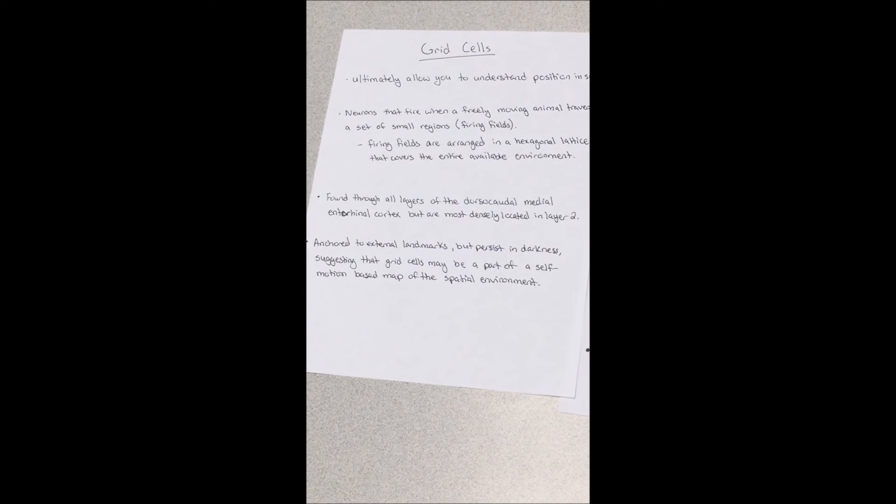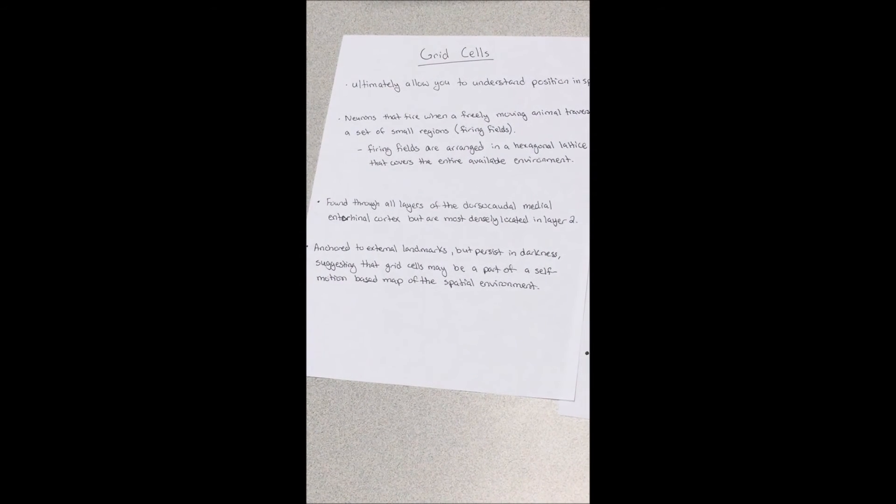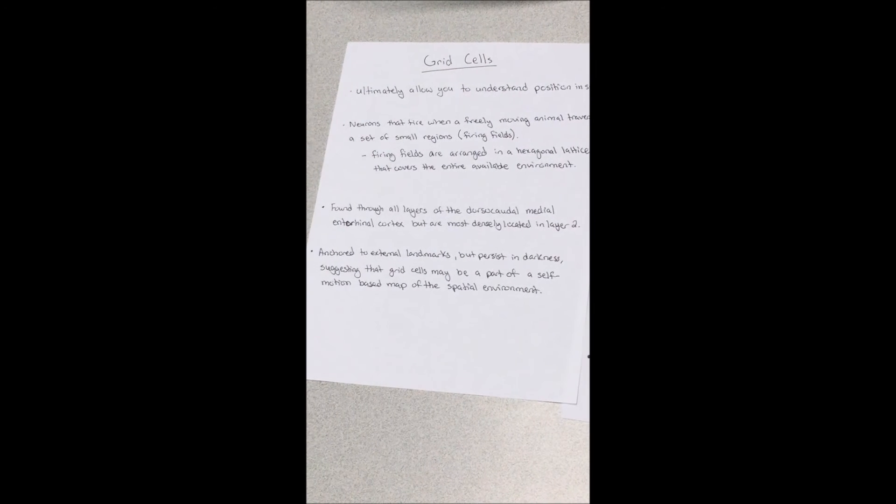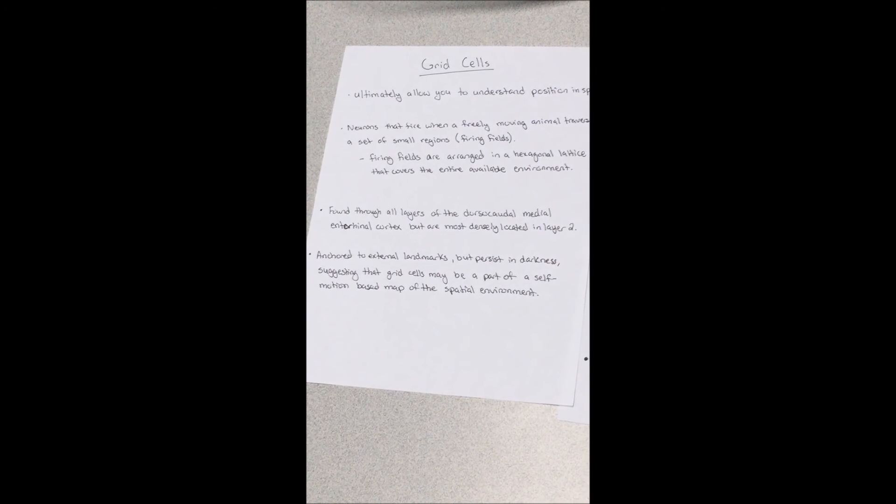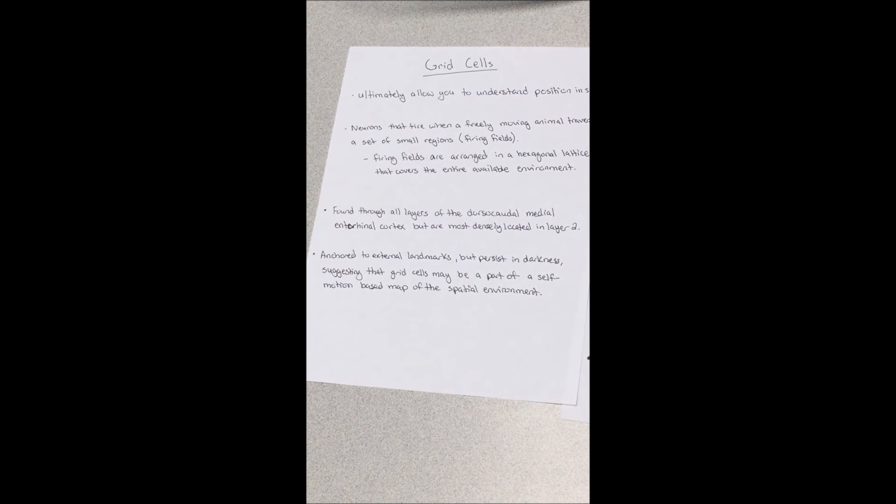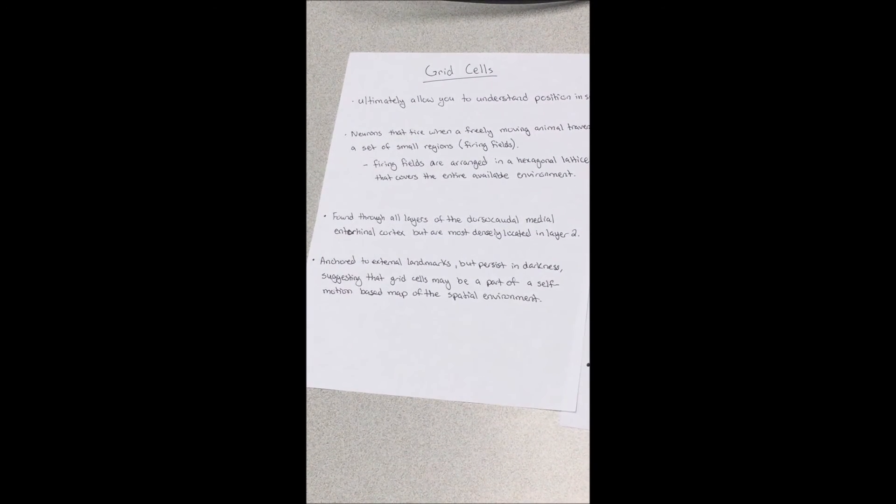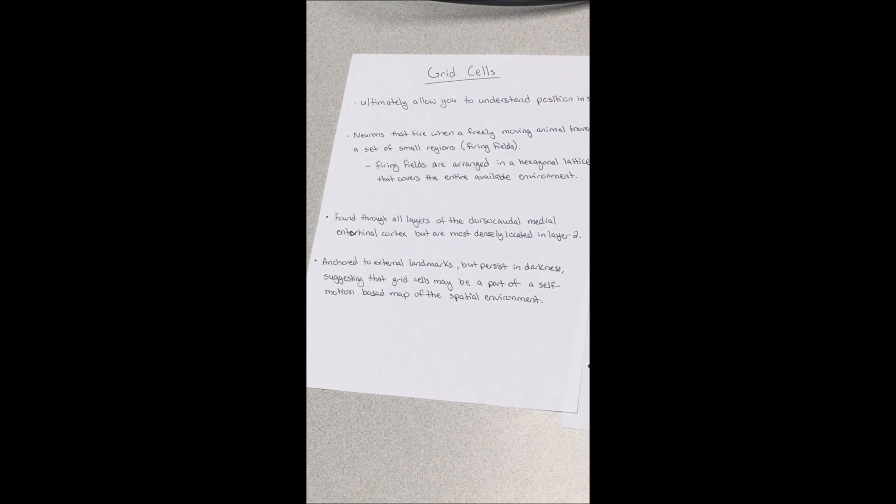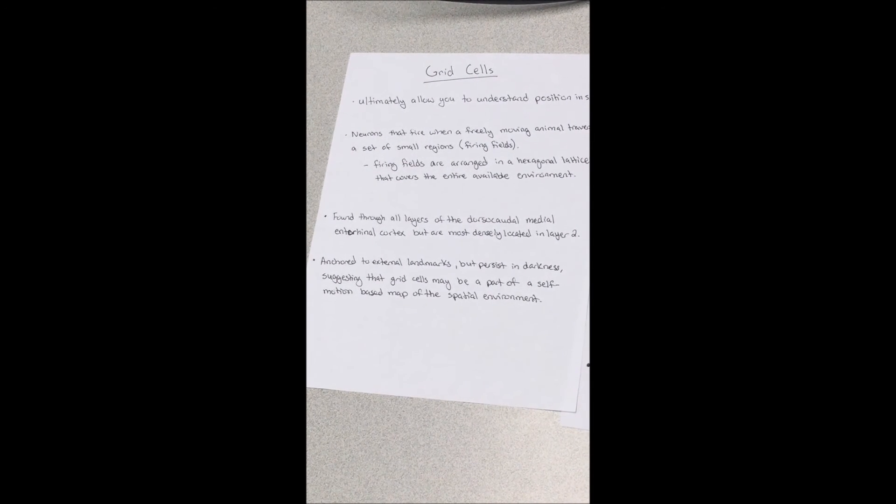These grid cells are found through all layers of the dorsal caudal medial entorhinal cortex, but are most densely located in layer 2. The most interesting thing is these firing fields are anchored to external landmarks, so grid cells may be a part of a self-motion-based map of the spatial environment.